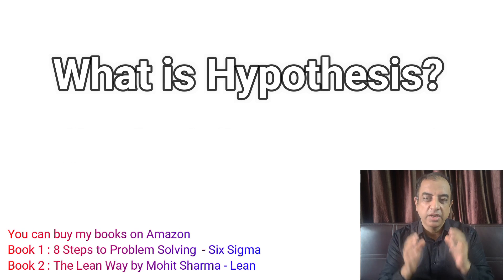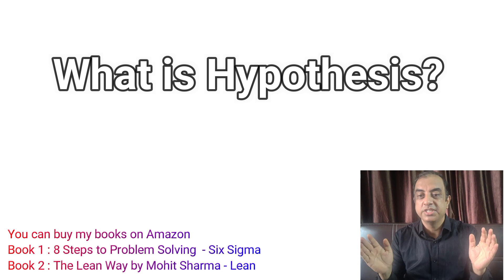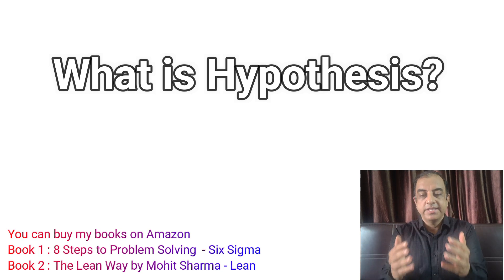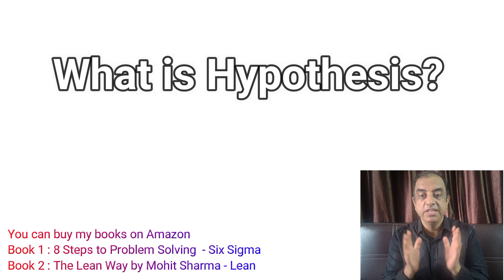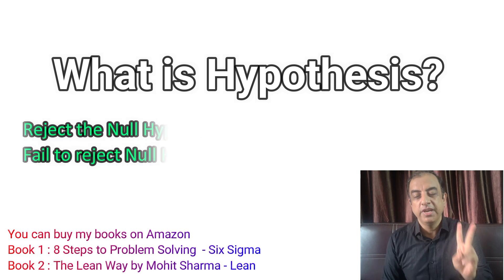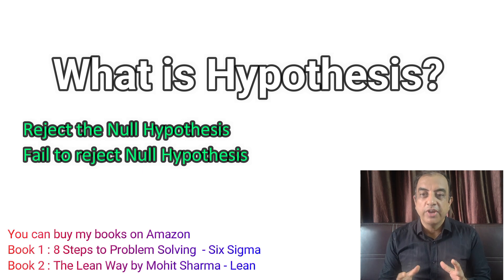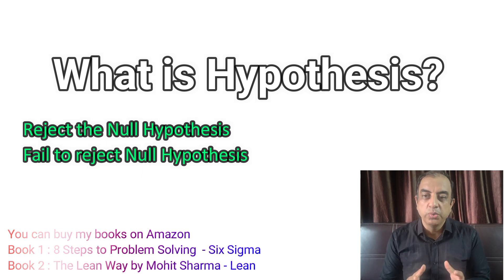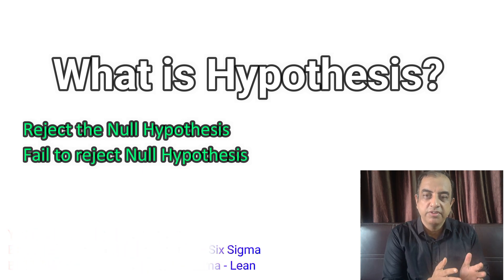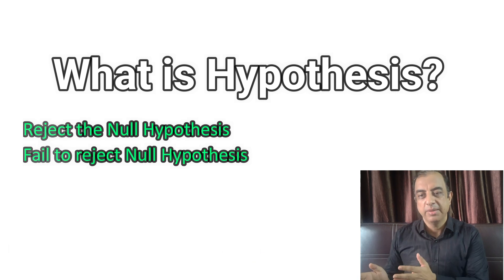Null and alternate hypotheses are always mathematically opposite statements. We then have to test these hypotheses, and the possible outcomes are: we reject the null hypothesis, or we fail to reject the null hypothesis. We do not prove anything to be true — that is why we use those specific terms.